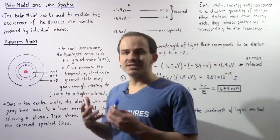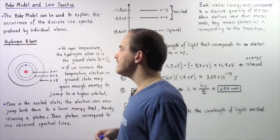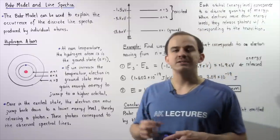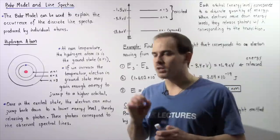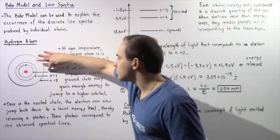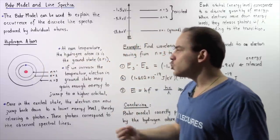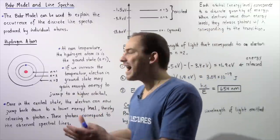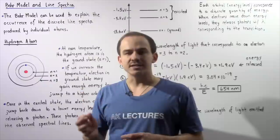Let's begin by looking at the simplest element, the hydrogen atom. The hydrogen atom contains a single proton and a single electron. If the atom is at room temperature, the electron will be found in the ground state — in the orbital that is lowest in energy, closest to the nucleus, which represents the orbital with the principal quantum number n equals 1. Now, n equals 2 and n equals 3 are orbitals that are higher in energy, known as the excited orbitals. When our electron is found in those orbitals, the electron is said to be in the excited state.